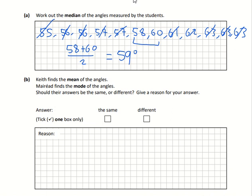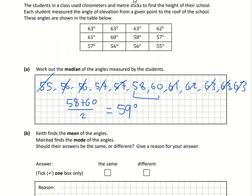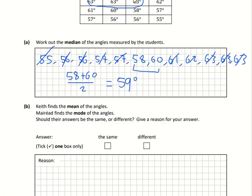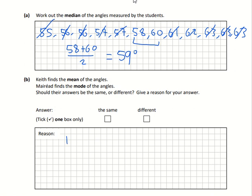The second part asks us if the mean and mode are the same or different. We can see that the mode is 63 because mode means most common. But 63 is the biggest value in the list of numbers, so therefore the mean has to be smaller.